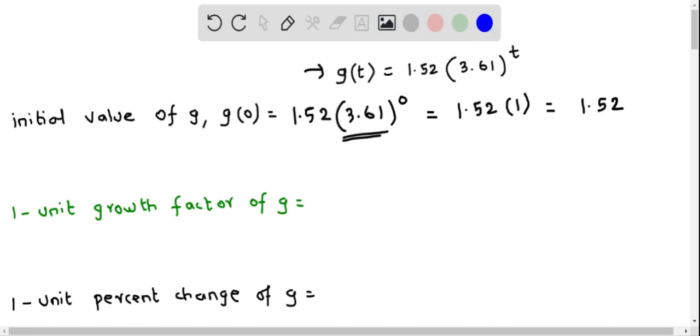Therefore we see that g of 0 equals 1.52, and for any exponential function we can easily determine the initial value by looking at this number which comes before the exponent. So this is usually the initial value of g.